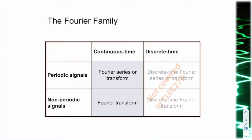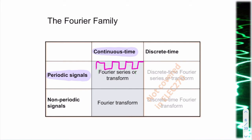In week three, we spoke about periodic signals that were continuous in time — continuous in time and periodic — and for those we used the Fourier series. Then in Lecture 4, we looked at non-periodic signals, for which the Fourier series would be inappropriate, so we used the Fourier transform. The Fourier transform is also applicable to periodic signals, so the Fourier transform works for both, while the Fourier series works only for periodic signals.